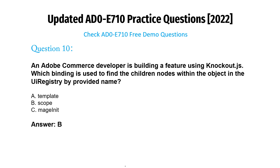Question 10. An Adobe Commerce developer is building a feature using knockout.js. Which binding is used to find the children nodes within the object in the UI registry by provided name? A. Template. B. Scope. C. Mage init. Answer: B.